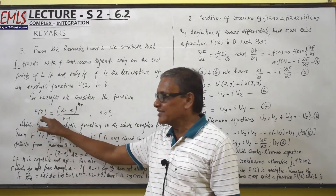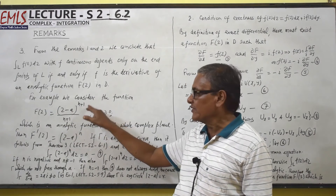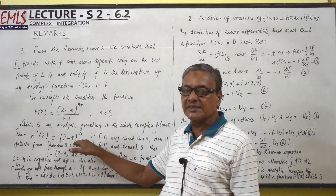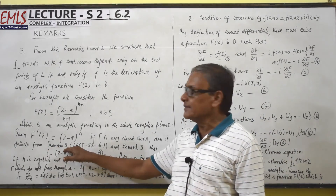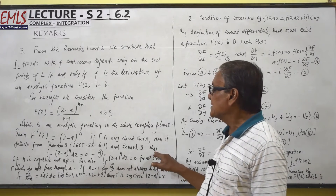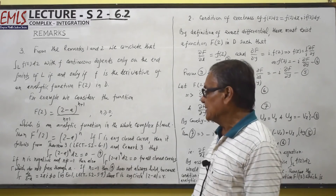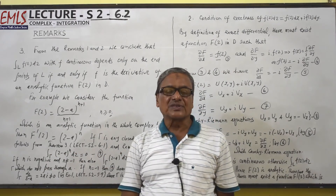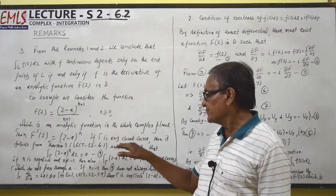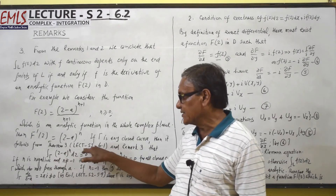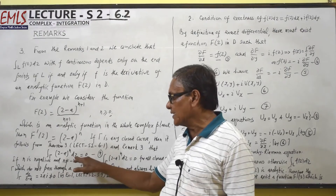The derivative F'(z) equals (n+1)·(z minus a)^n divided by (n+1), so we are left with (z minus a)^n. If gamma is any closed curve, then it follows from Theorem 3 of Lecture S26.1 and Remark 3 that the integral over gamma of (z minus a)^n dz equals 0. This theorem states that if gamma is a closed curve and this is an analytic function, then the integral over gamma of this function is 0.